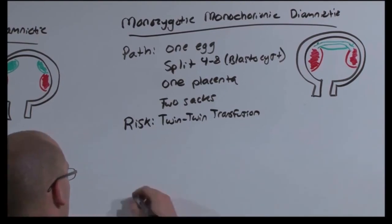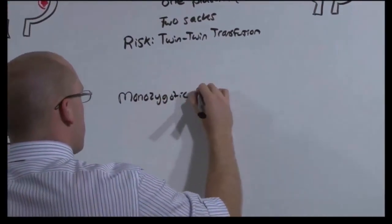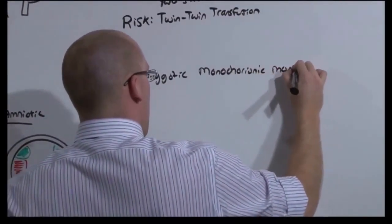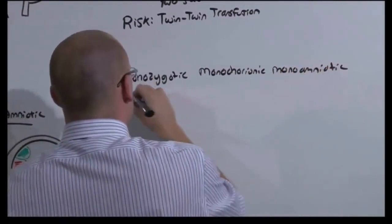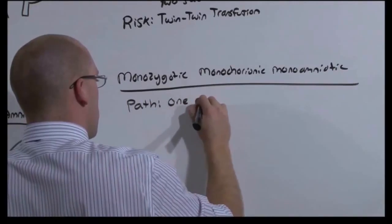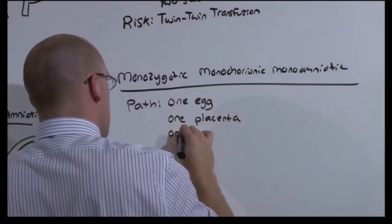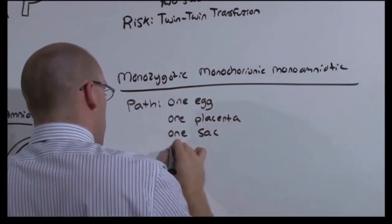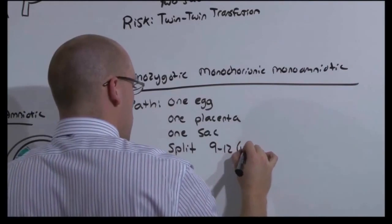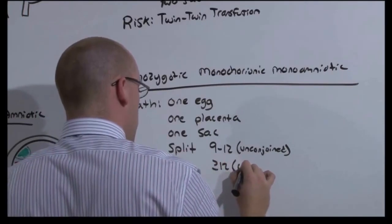And finally, the last type of twin we have to talk about is the mono-mono-mono, monozygotic, monochorionic, monoamniotic. This is caused by a split of one egg. There is only one placenta, and both fetuses develop within the same one sac. In order for this to happen, the split has to be late. If the split happens between days 9 and 12, they are unconjoined. And if it happens greater than day 12, you will have conjoined twins.